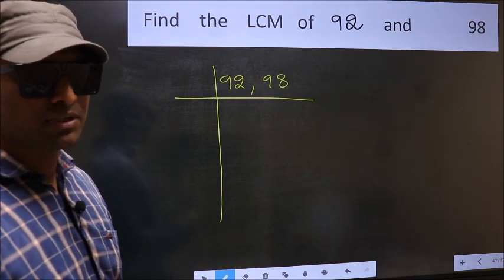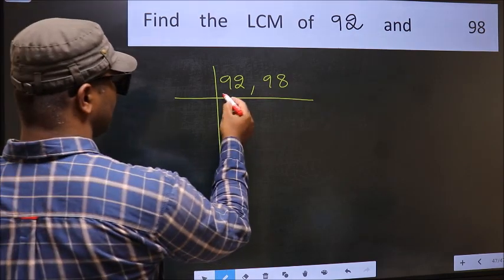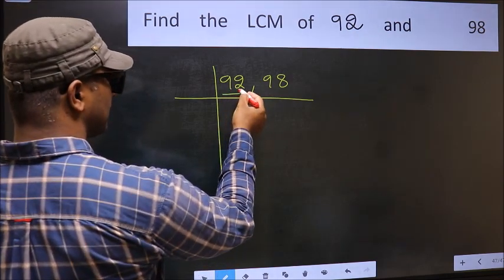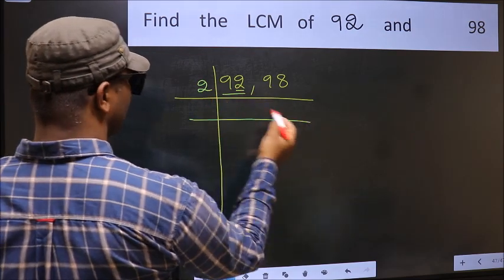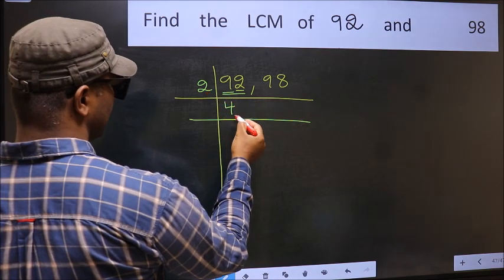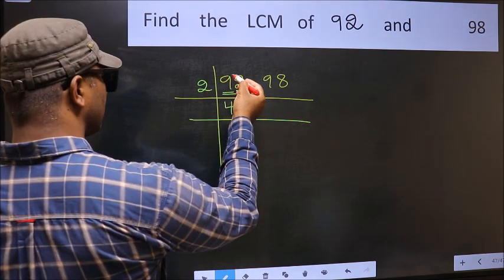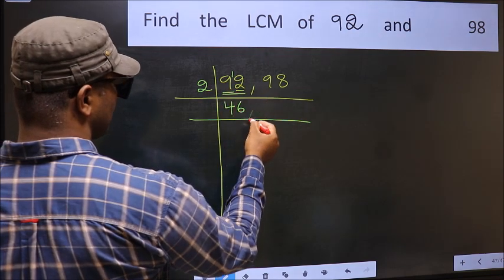Now you should focus on the first number, which is 92 here. In this number, last digit 2 is even, so take 2. First number 9. A number close to 9 in 2 table is 2 times 4 equals 8. 9 minus 8 equals 1. 1 carried forward makes 12. When do we get 12 in 2 table? 2 times 6 equals 12.